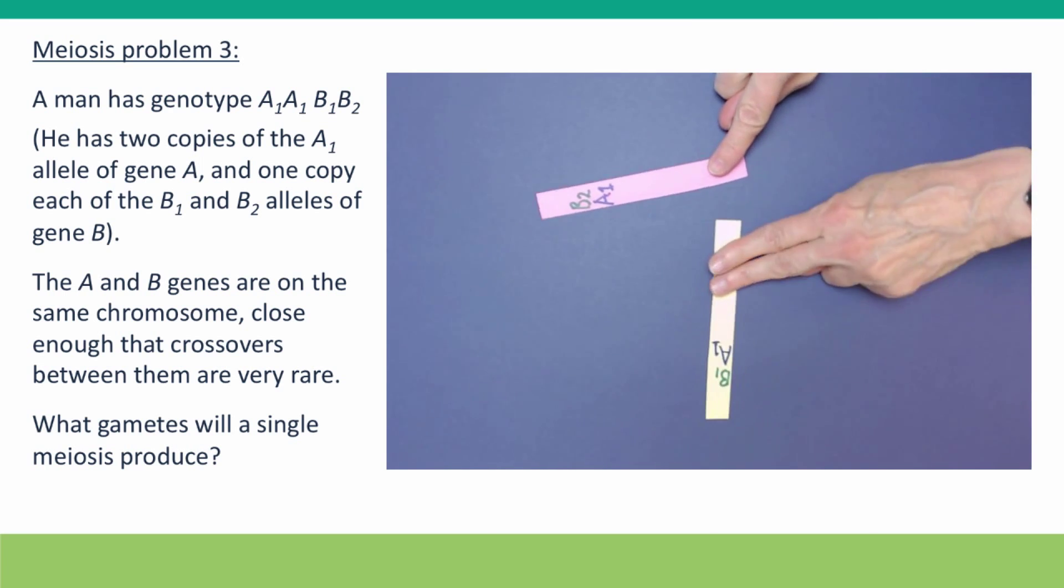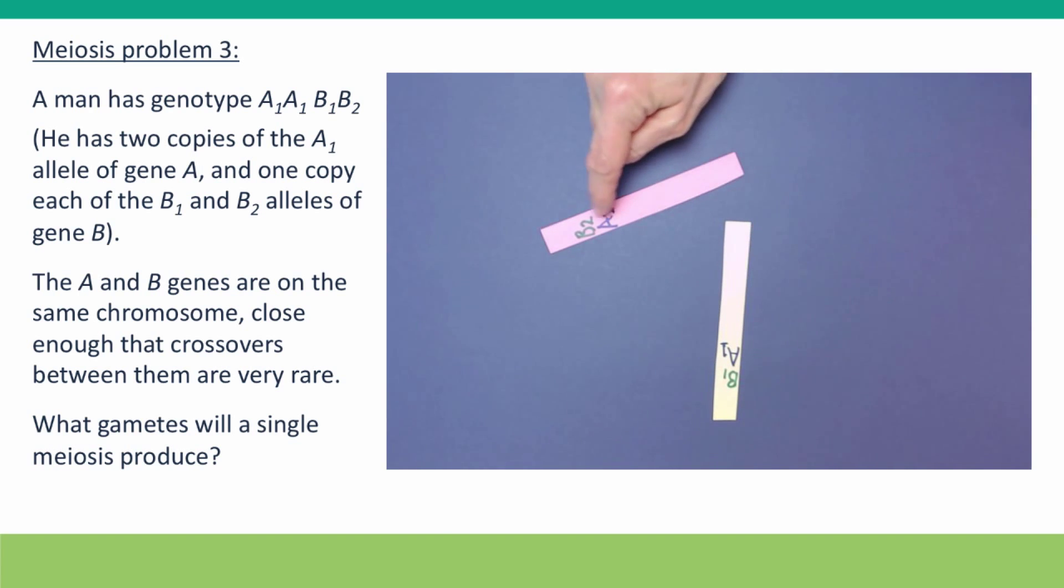Let's just do it and see what we get. Here's our two chromosomes. I've drawn A1 and B2 close together to remind us that we don't need to worry about crossovers.